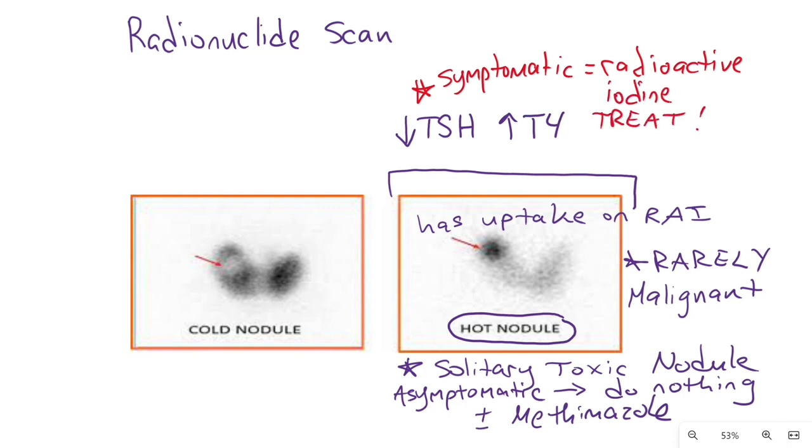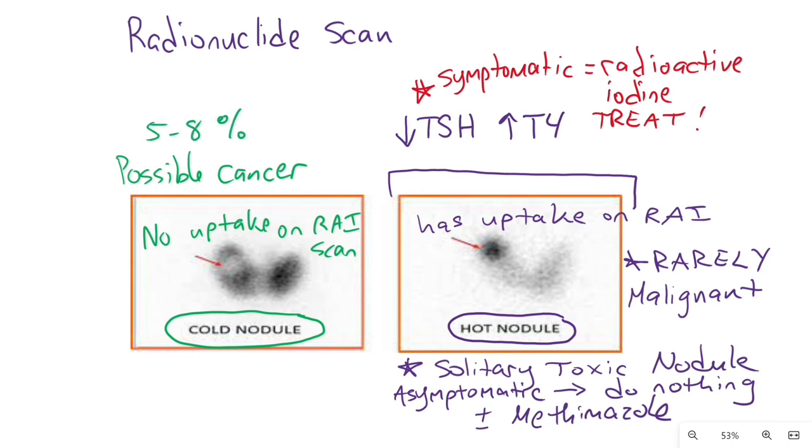Cancers tend to have normal thyroid function testing and look cold or no uptake on radioactive iodine uptake scan. Overall, cold nodules possess a five to eight percent malignant potential. Incidental thyroid nodules that light up on PET scan done for other reasons have a 15 to 30 percent risk of malignancy.